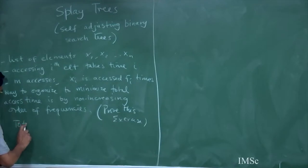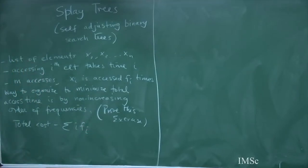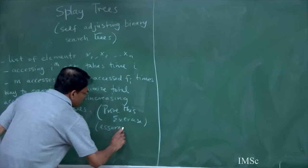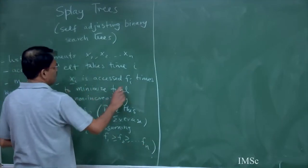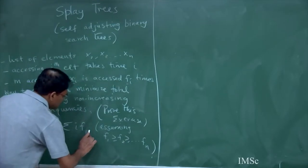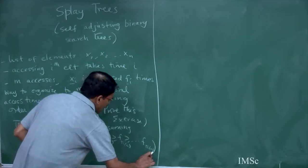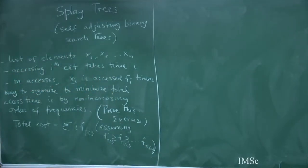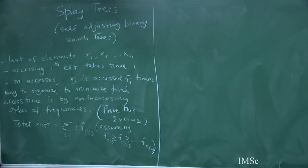So what would be the total cost? It would be summation of fi times i — assuming xi takes fi time. So whichever element has the highest frequency, if I call it f of 1, then accessing that will take one step. So 1 times f(1) and so on — this is my total cost.